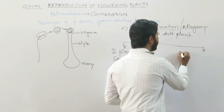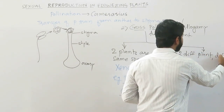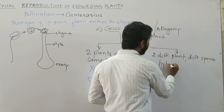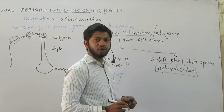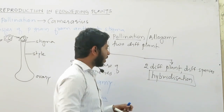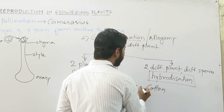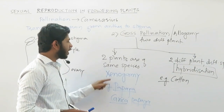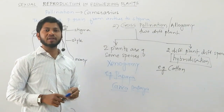If pollination occurs between two different plants that belong to different species, this type of pollination is called hybridization. Hybridization is commonly not a successful type of pollination because incompatible pollen grains are deposited on the stigma. An example of hybridization is cotton, where hybridization type of cross-pollination takes place. This is all about pollination and its types.